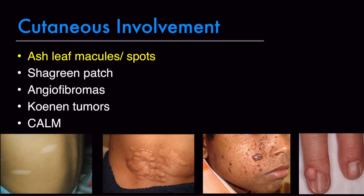The cutaneous involvement in tuberous sclerosis includes ash leaf macules or ash leaf spots, which are hypopigmented patches. There is also the shagreen patch, which is basically a collagenoma, and angiofibromas, which are falsely called adenoma sebaceum. Additionally, there are Koenen tumors, which are periungual fibromas, and also café-au-lait macules.